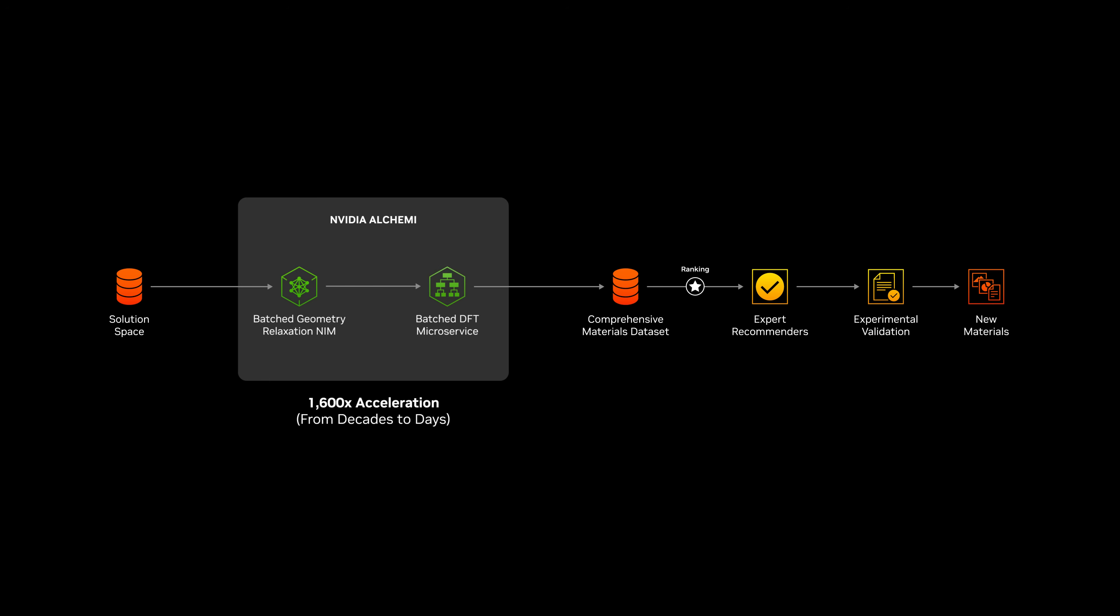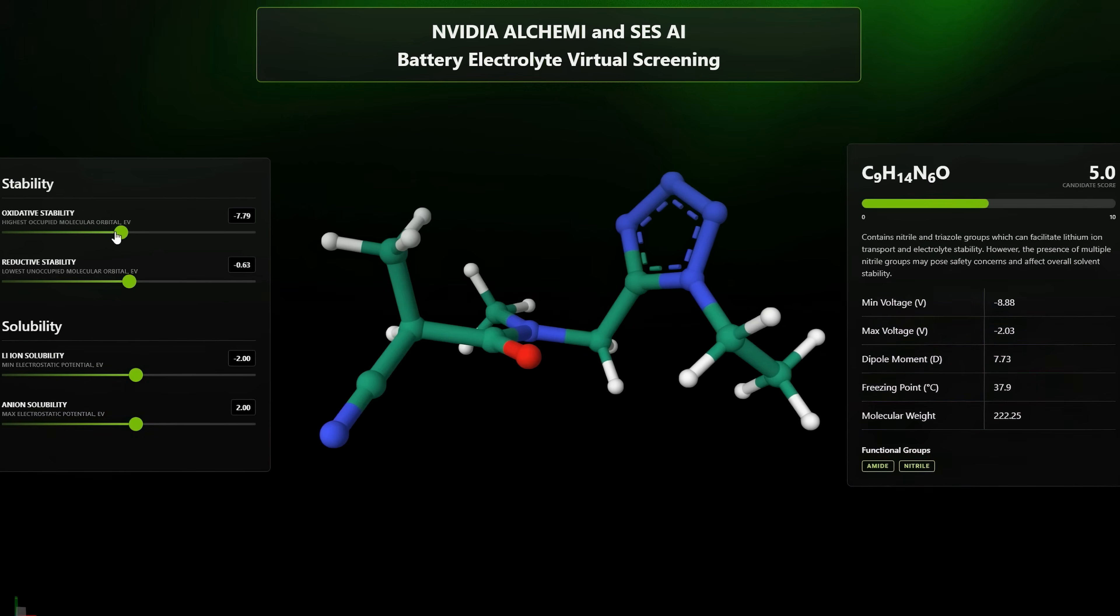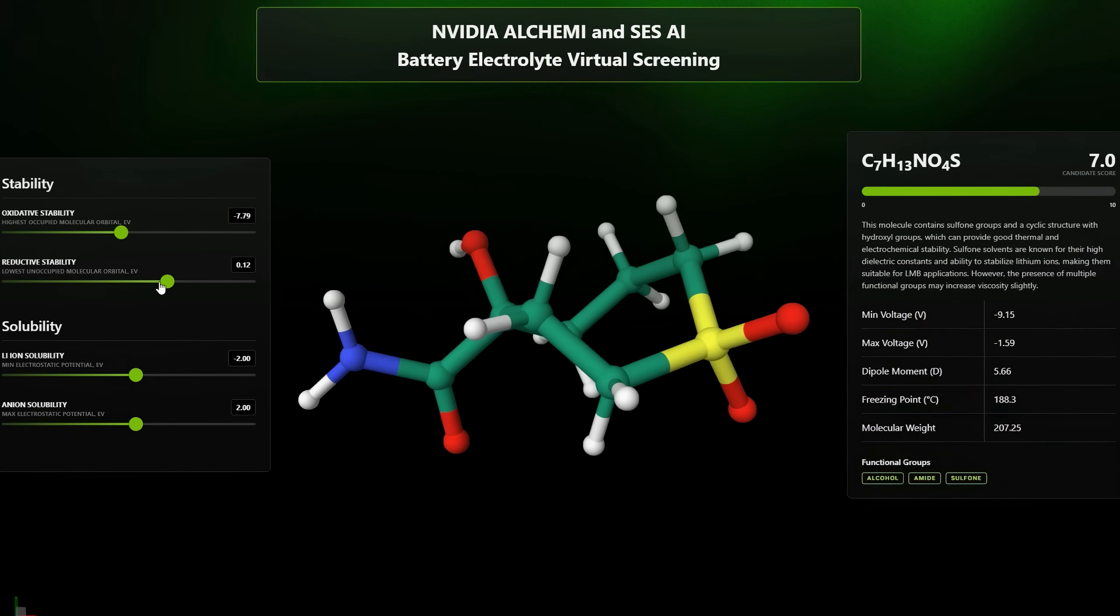With the lowest energy state at hand, Alchemy's Batched Density Functional Theory, or DFT microservice, can efficiently calculate properties for a given application. The generated datasets can be used to virtually screen and recommend optimal candidates before costly, real-world testing.